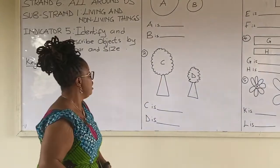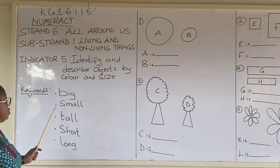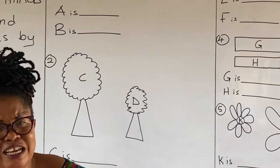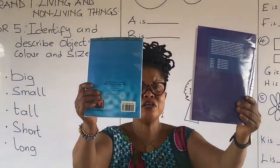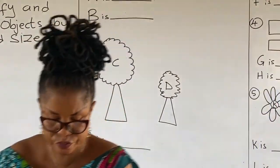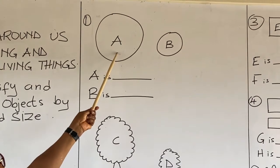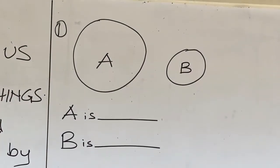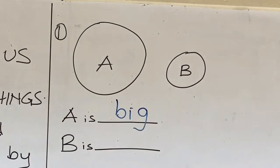Let's move to the examples. Today we are going to compare objects using big, small, tall, short, and long. Let's look at big and small: this book is big, this book is small. When you compare the two, this book is big and this book is small. Now let's look at objects A and B — which one is big, which one is small? A is big, B is small.